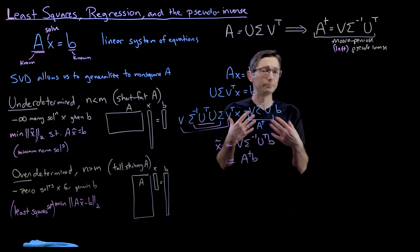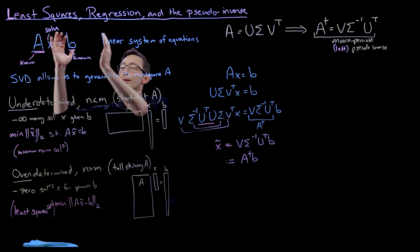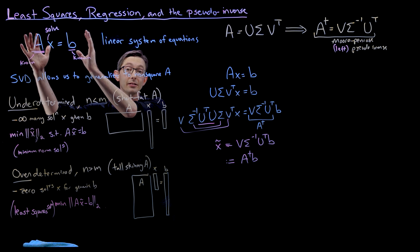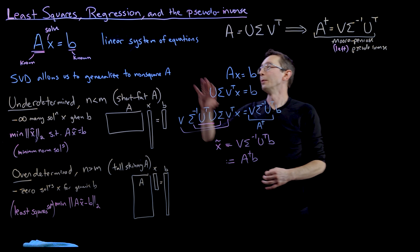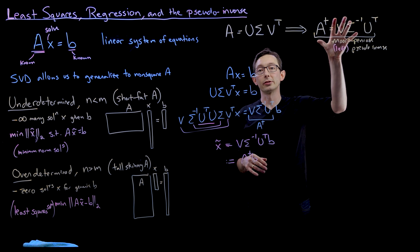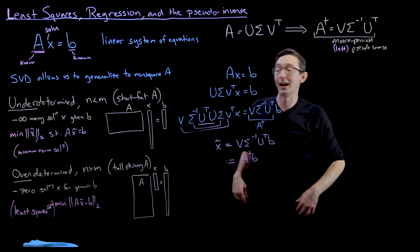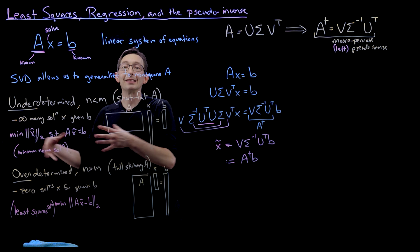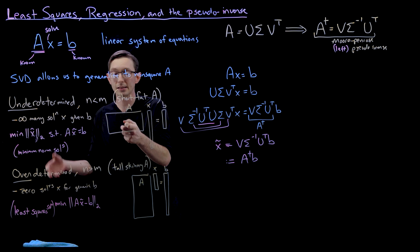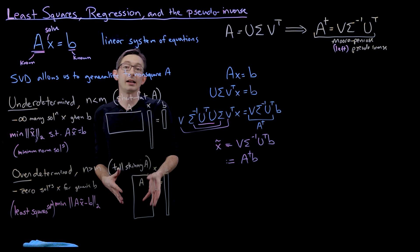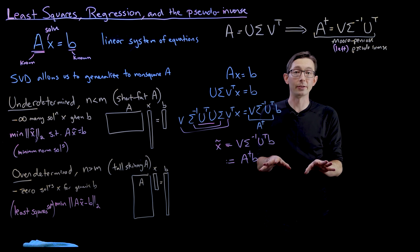You now have the power to generalize linear systems of equations to non-square matrices A, computing the pseudo inverse using the SVD instead of the regular inverse. The solution you get has very nice optimal properties: either the minimum norm solution that satisfies the system, or the least squares solution. This is the cornerstone of linear least squares regression, which we'll talk about more in the next few lectures.